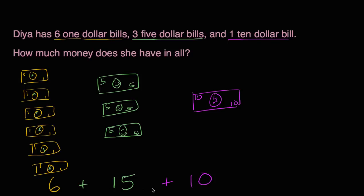So what's six plus 15 plus 10? Well, let's see. Six plus 15 is going to be 21. 21 plus 10 is going to be equal to $31. It's equal to $31.